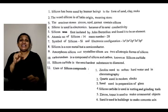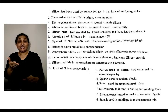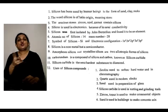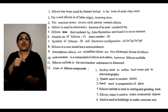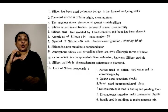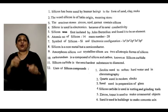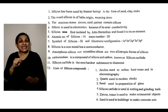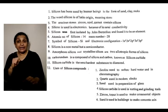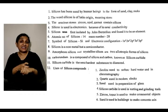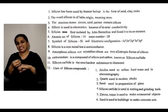Amorphous or powdery silicon and crystalline silicon are two allotropic forms of silicon. Silicon carbide is a compound of silicon and carbon. Silicon carbide is the next hardest substance after diamond.